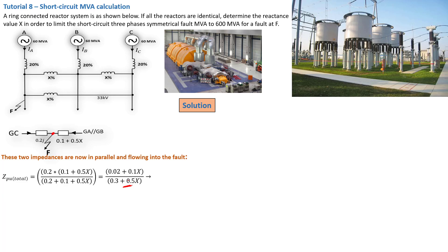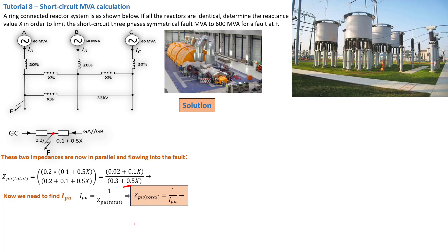The Z per unit total cannot be determined yet because we've got the unknown X. We need to find X. What is the formula for Z per unit? We know that I per unit = 1 over Z per unit, which means Z per unit total = 1 over I per unit. If we replace Z per unit total with this expression and also find I per unit and substitute it, we will be left only with X, which we can then determine. That X is the reactance we are looking for.